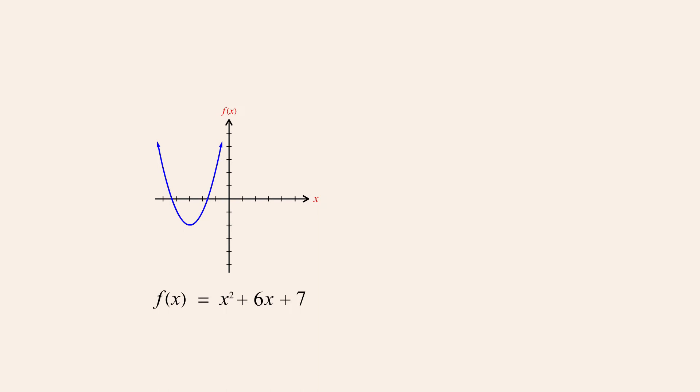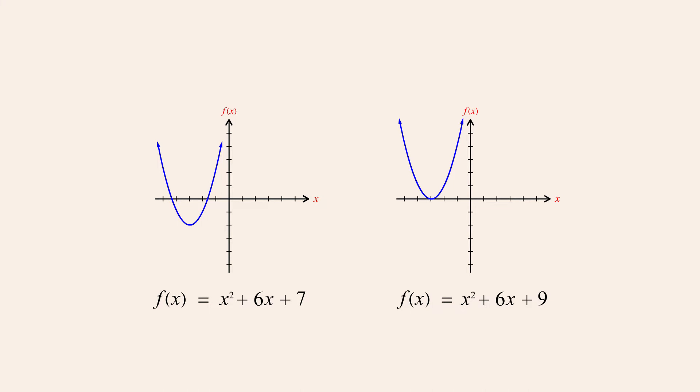To understand the concept of completing the square, let's start by comparing two quadratic functions: x-squared plus 6x plus 7, and x-squared plus 6x plus 9. These two functions are identical except for their constant terms, 7 and 9. Since 9 is 2 greater than 7, the right graph is identical but shifted two units higher. However, there is another important difference: the function on the right is a perfect square.